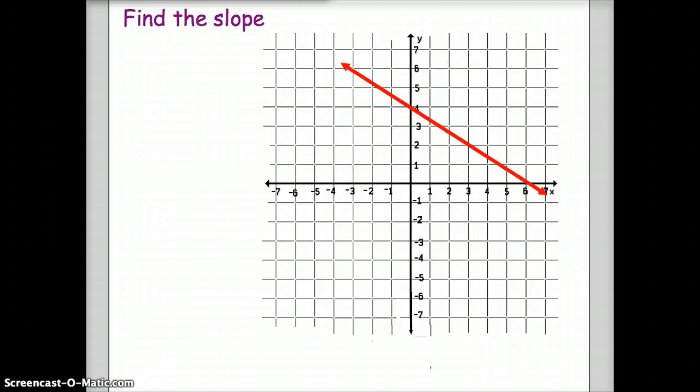Your turn. Try this problem. Remember what happens when a line falls from left to right. Pause your video at this time. Did you get a slope of negative 2 thirds? If you did, give yourself a big giant eyed smiley face with some kind of crazy eyes. If you did not, go back and try the problem again.